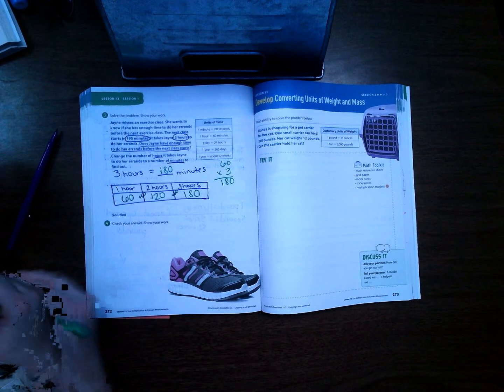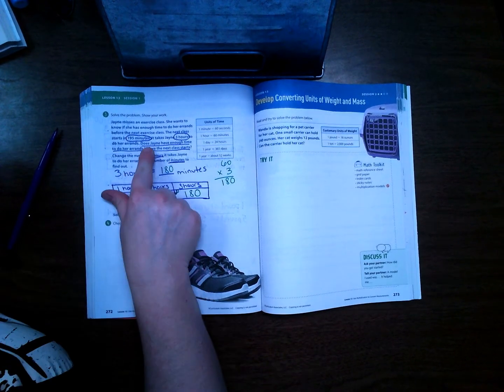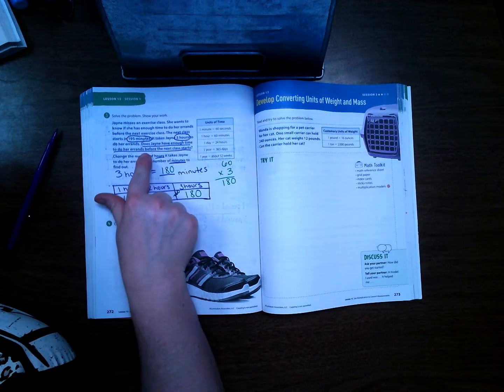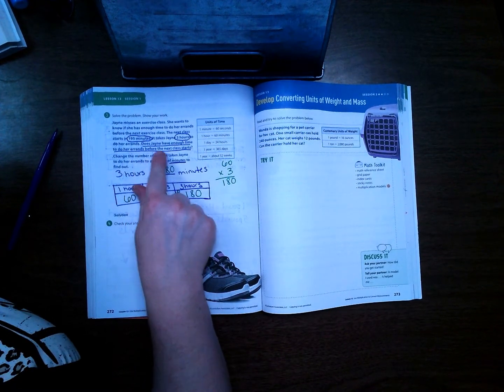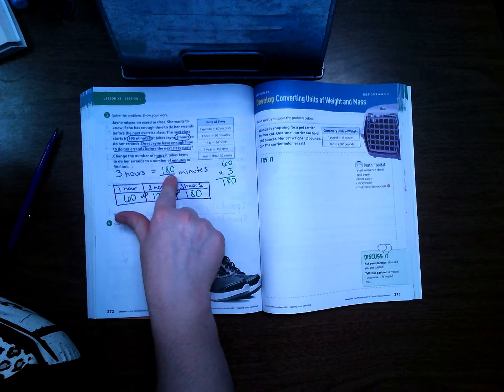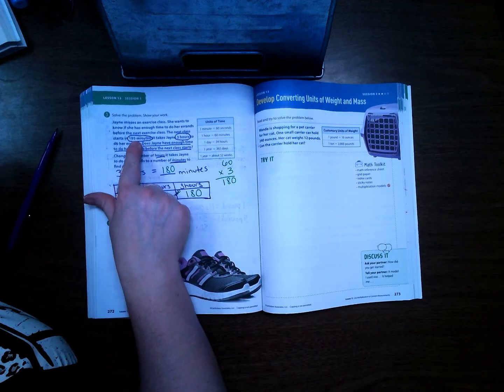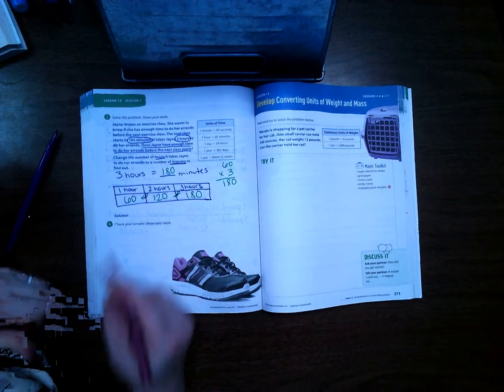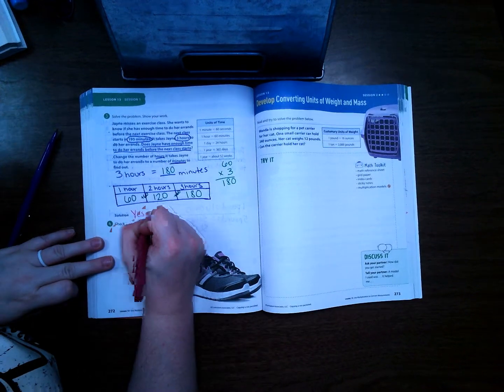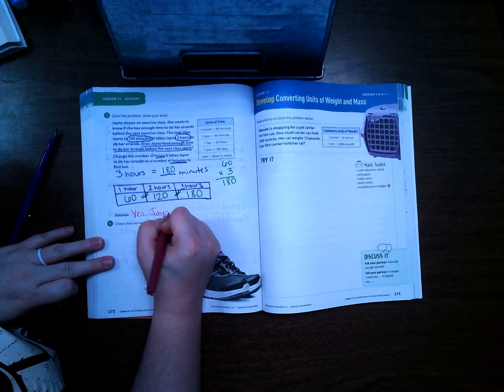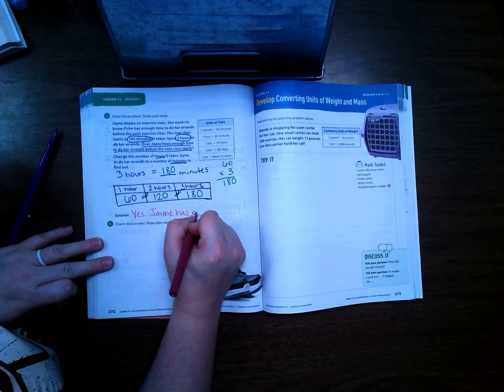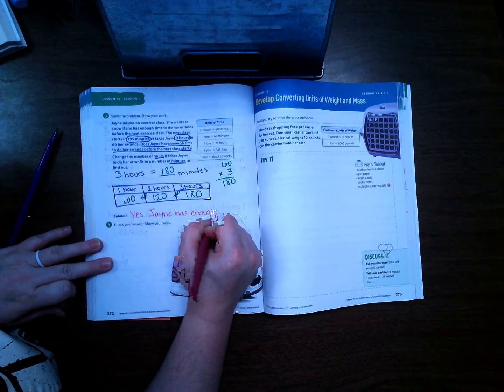So now we have to go back to our question. Does Jane have enough time to do her errands before the next class starts? Well, it's going to take her 180 minutes to do her errands, and the next class starts in 195 minutes. So yes, Jane has enough time.